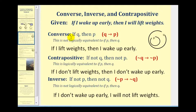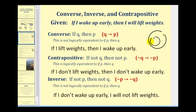So for the converse, if Q then P, we interchange the hypothesis and conclusion. So we'd have: if I lift weights, then I wake up early. Looking at the Venn diagram, if I lift weights means I'm inside set Q. Then I wake up early means I'm inside set P. So just because I'm inside Q doesn't guarantee that I'm inside P. Therefore, this is not logically equivalent to if P then Q, which means it may be true or it may be false.